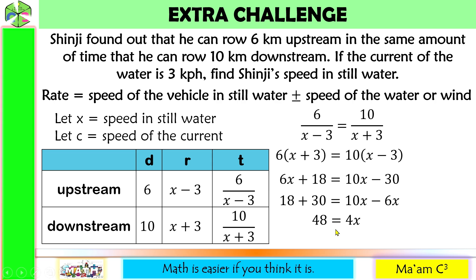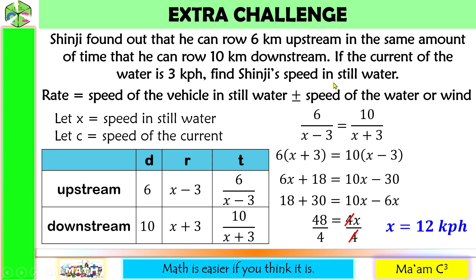Dividing both sides by 4: X = 12. So Shinji's speed in still water is 12 kilometers per hour. Checking: 6 / (12 − 3) = 6/9 = 2/3, and 10 / (12 + 3) = 10/15 = 2/3. Both times are equal — correct.